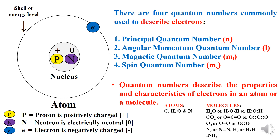Some of the atoms regularly encountered in organic chemistry are carbon, hydrogen, oxygen and nitrogen. While some of the molecules commonly encountered in organic chemistry are the water molecule, carbon dioxide, oxygen, nitrogen and hydrogen molecule.